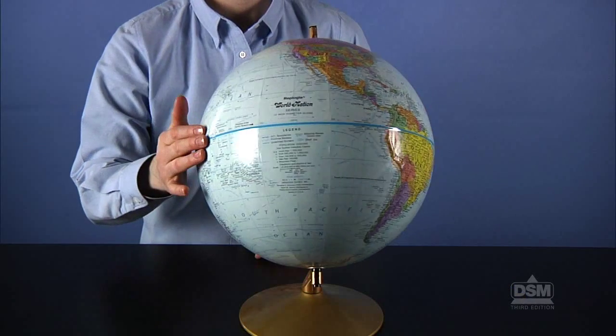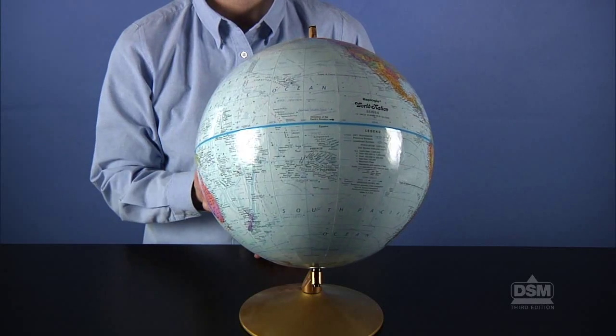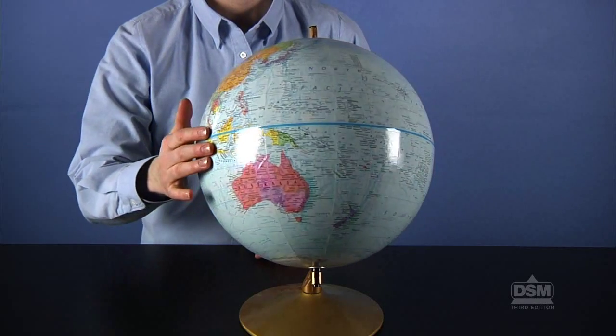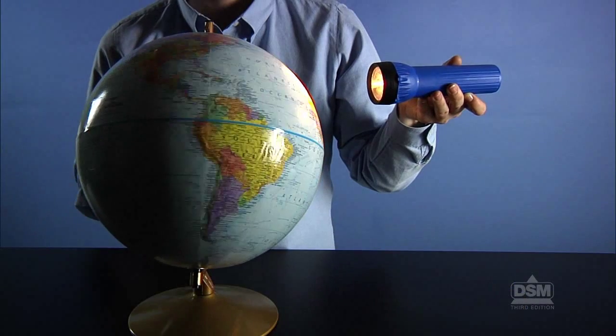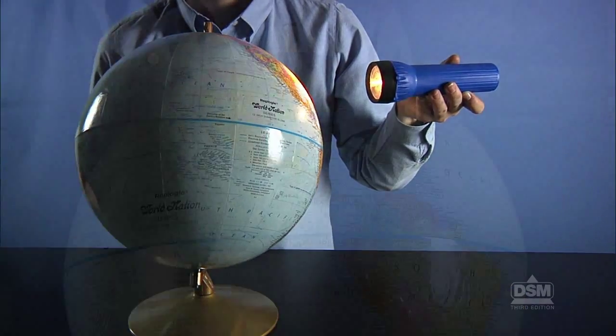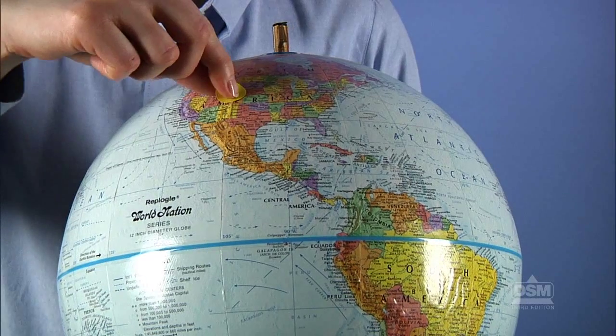Use the classroom globe to demonstrate what you have just told students. Model the rotation of Earth by slowly spinning the class globe on its axis. Model day and night by shining the flashlight on the globe while spinning it. Mark your location on the globe with a yellow adhesive dot.